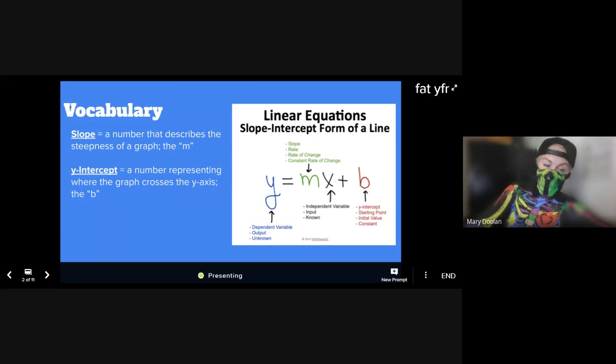Slope, it's just a number. It's a ratio that describes the steepness of a graph. It's the lowercase m, always lowercase, never uppercase. Y-intercept, it's a number representing where the graph crosses the y-axis. It's also just a value. We call it b. So wherever your line intersects or intercepts the y-axis, that is the y-intercept.